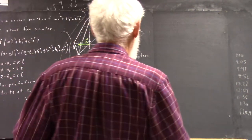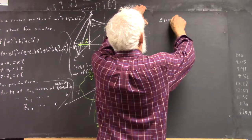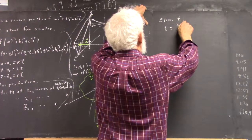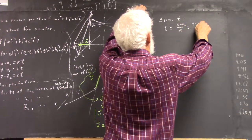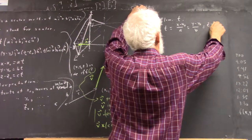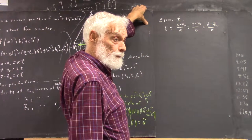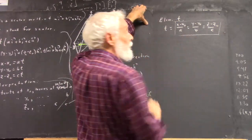Okay, eliminate T. T equals X minus X naught over A equals Y minus Y naught over B equals Z minus Z naught over C. Right? I said standard equation. It's called the symmetric equations.